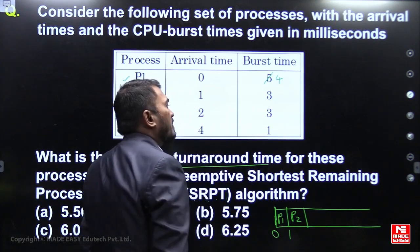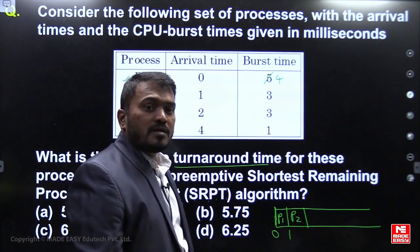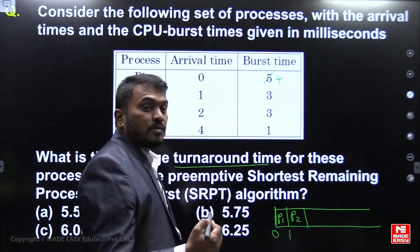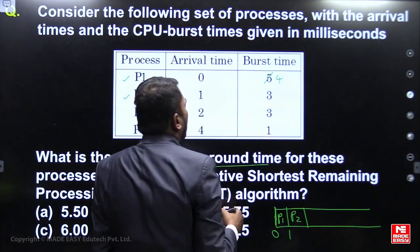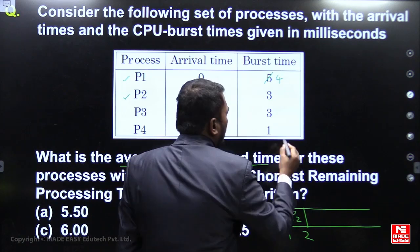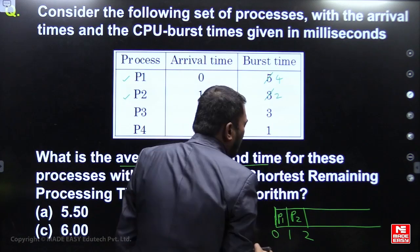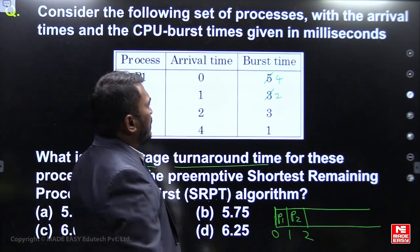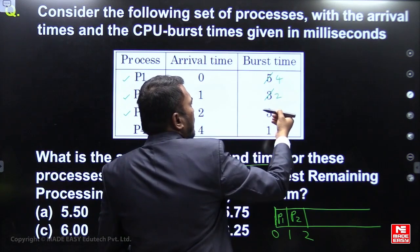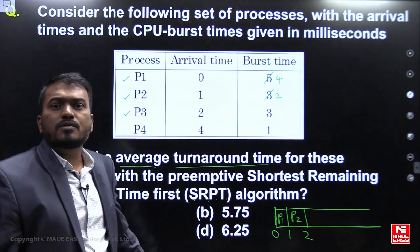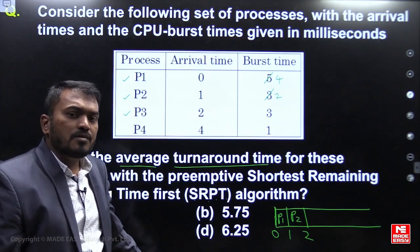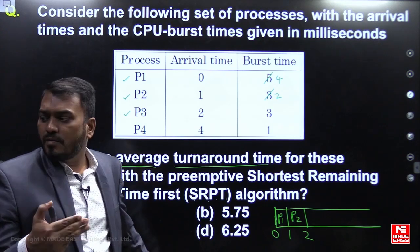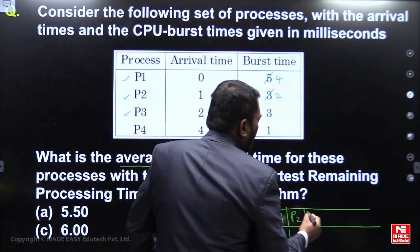P2 requires 3 units of time, so we preempt P1 and schedule P2 because P2 has the shortest burst time. Execute P2 for one unit — remaining time becomes 2. By time 2, P3 also arrives, but among available processes with burst times 4, 2, and 3, P2 is still the shortest job, so continue with P2.